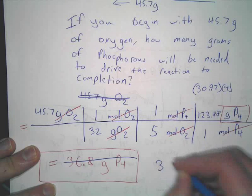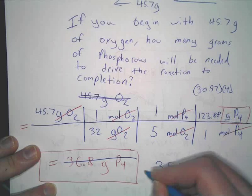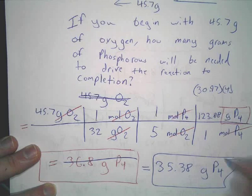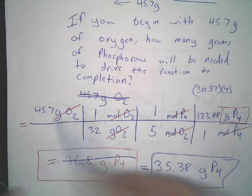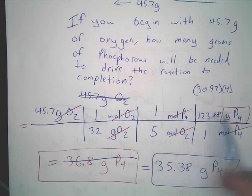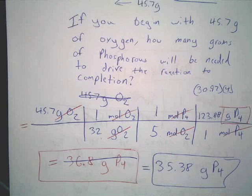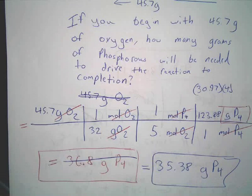So, what is it? 35.38. All right. So, let me review really quick, in case any of you are wondering and not asking, how do you actually do these again? You multiply 45.7 times 123.88. Then you divide by 32 and divide by 5. Or, you multiply these two together. You multiply the bottom two together. And then you divide the two numbers. Either way works.